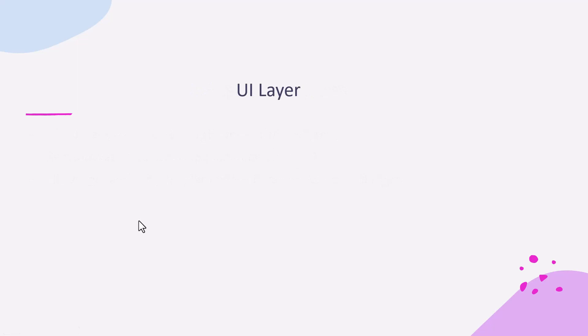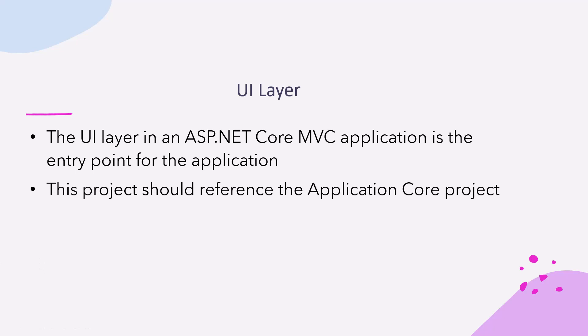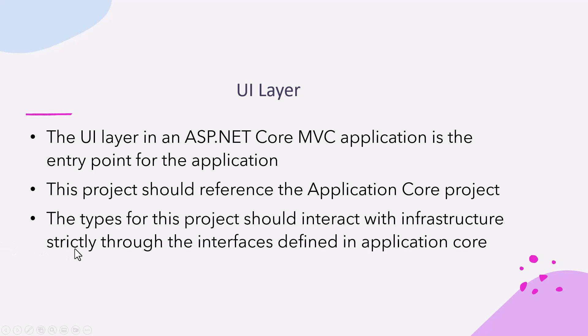Next comes the UI layer. The UI layer in an ASP.NET Core MVC application is the entry point for the application. The UI layer project should reference the application core project. The types for this project should interact with infrastructure strictly through the interfaces defined in the application. Direct instantiation of infrastructure layer types should not be allowed in the UI layer, and any static calls to infrastructure layer types should be disallowed.